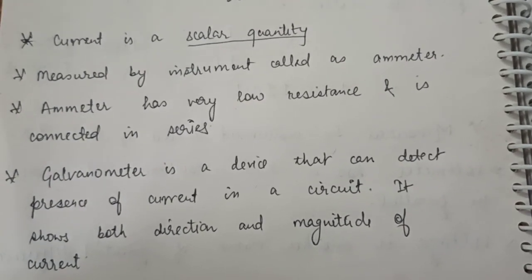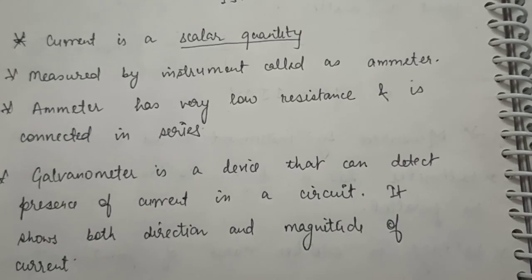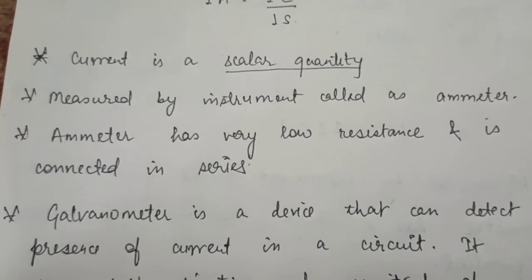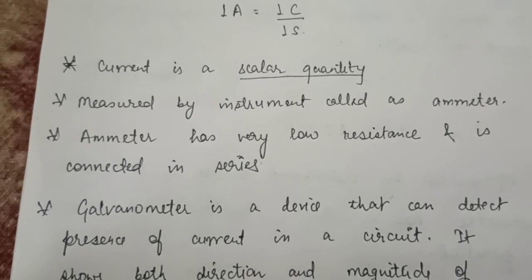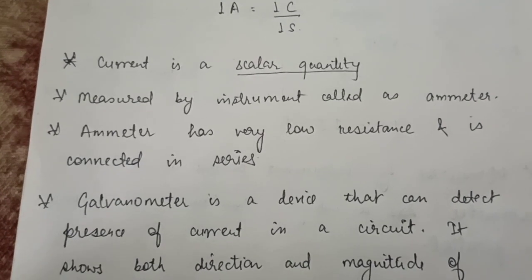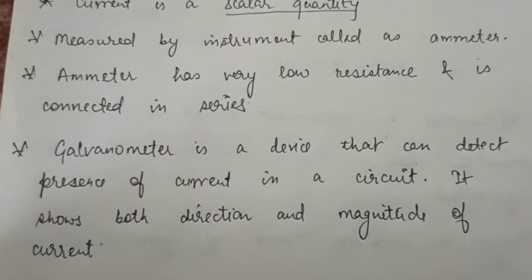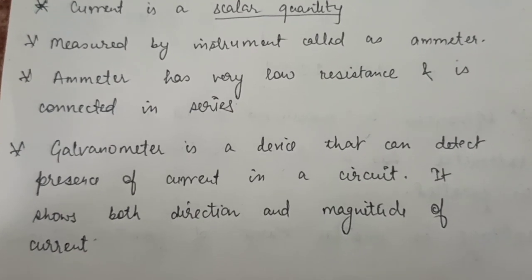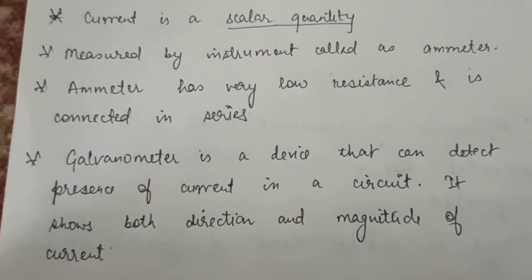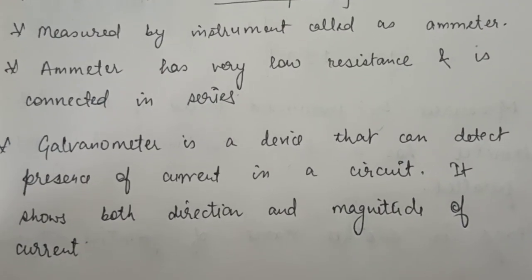The instrument used to measure current is the ammeter. The ammeter has very low resistance and is connected in series. There are two types of connections: series and parallel, which we will study when we cover circuits. Another instrument used to detect current is the galvanometer. The difference is that with an ammeter you get only the value of current, but with a galvanometer you can get both the direction and magnitude of current.